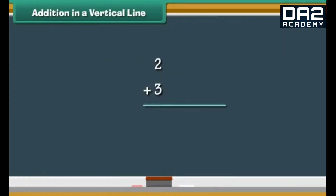Addition in a vertical line. Let us now add numbers vertically. To do that, let us write the numbers one below the other. To add two and three vertically, write the two numbers one below the other. Draw two vertical lines next to two and three vertical lines next to three. Count the vertical lines: 1, 2, 3, 4, 5. Therefore, two plus three is five.